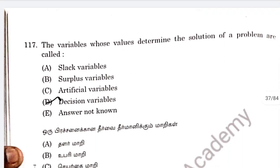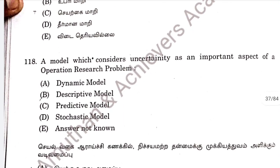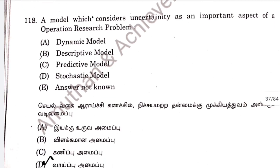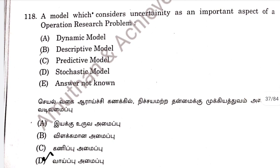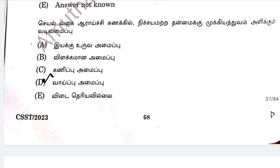Question 117: the variable whose value determines the solution of your problem is called a decision variable. Option D is correct. Question 118: a model which considers uncertainty as an important aspect of operations research problems is a stochastic model. Option D is correct.